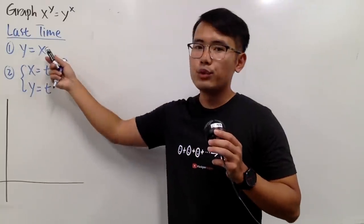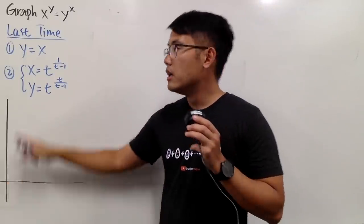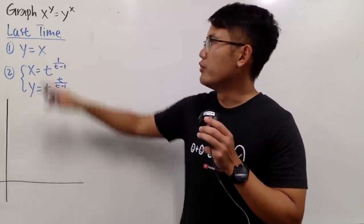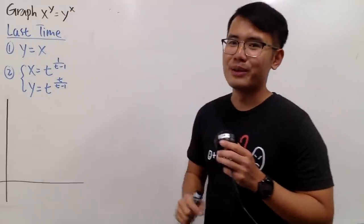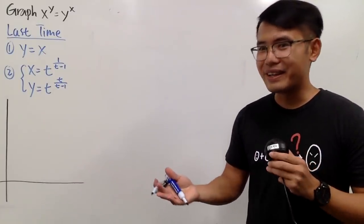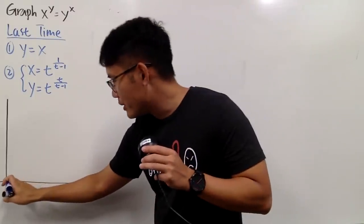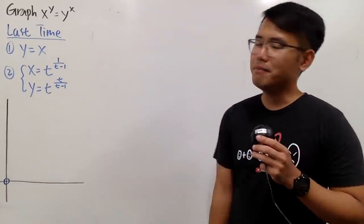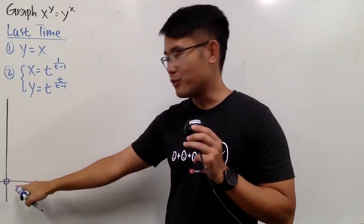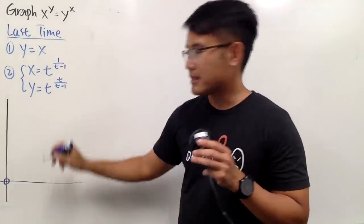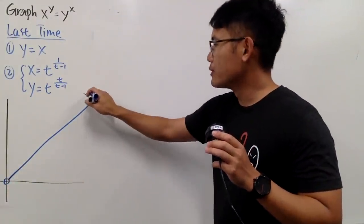First part: y is equal to x, and it's just this line. But I'm going to ignore the point (0,0), because if x and y are both equal to 0, you end up with 0 to the 0th power equals 0 to the 0th power. The moment I see 0 to the 0th power, I just want to avoid that. So let me put an open circle at (0,0) — if you want to fill that in, up to you. And then I can just graph y equals x, which is just the 45-degree diagonal line.